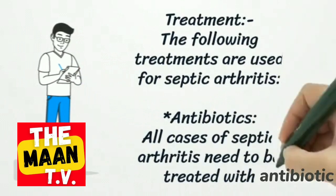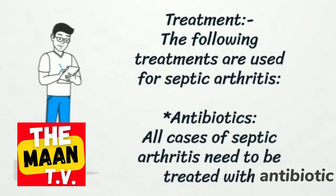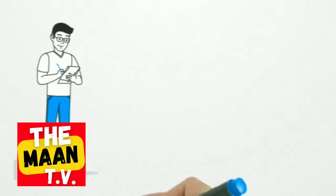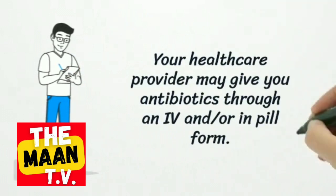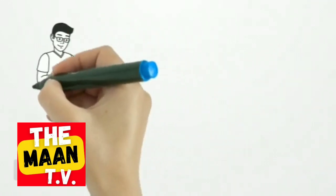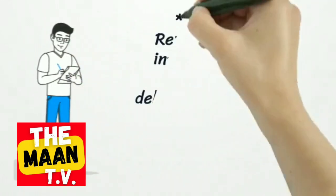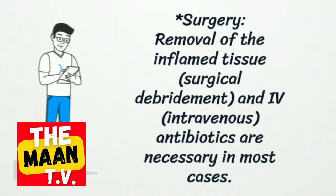The following treatments are used for septic arthritis. Antibiotics: all cases of septic arthritis need to be treated with antibiotics, which your healthcare provider may give through an IV and/or in pill form. Surgery involves removal of the inflamed tissue, surgical debridement, and IV (intravenous) antibiotics, which are necessary in most cases.